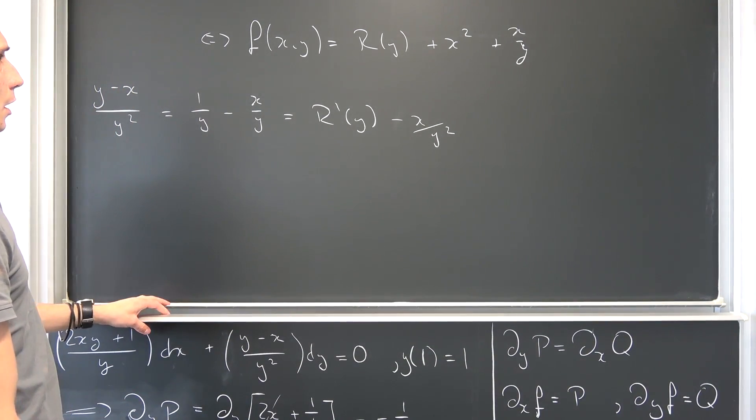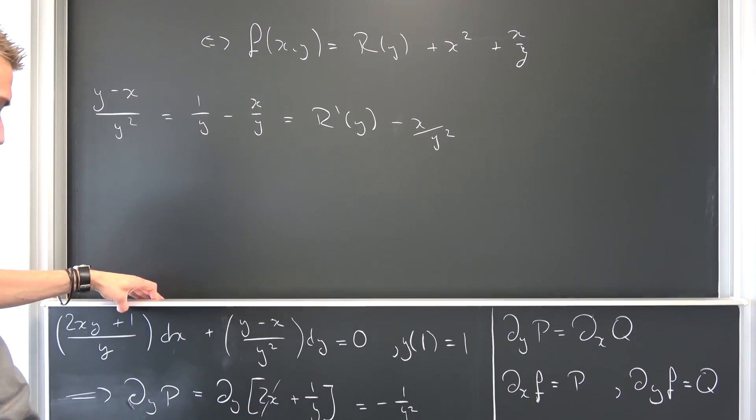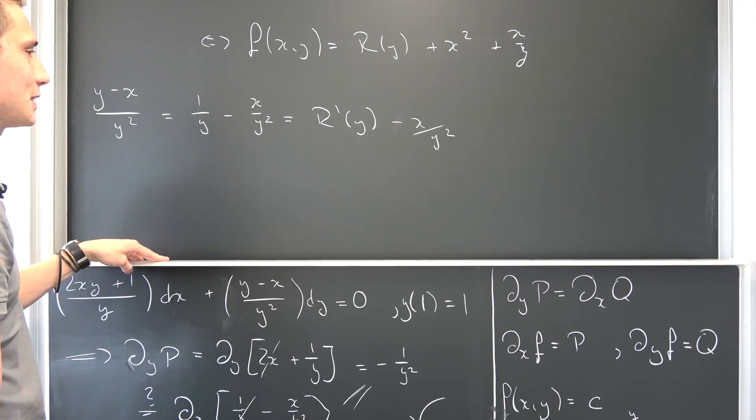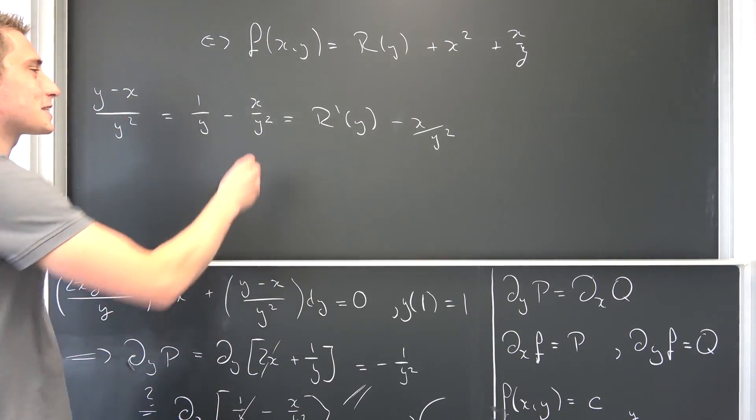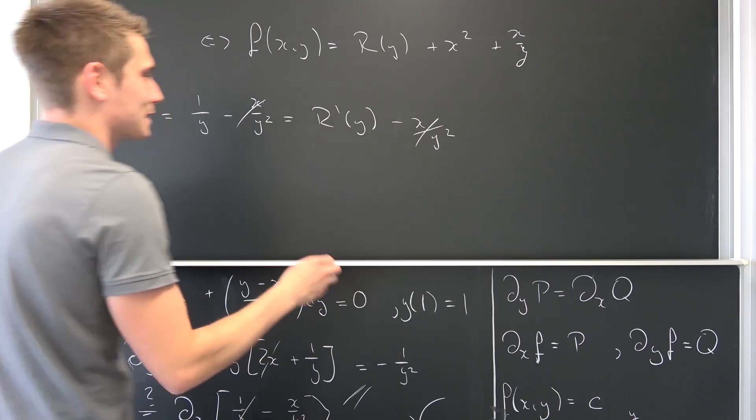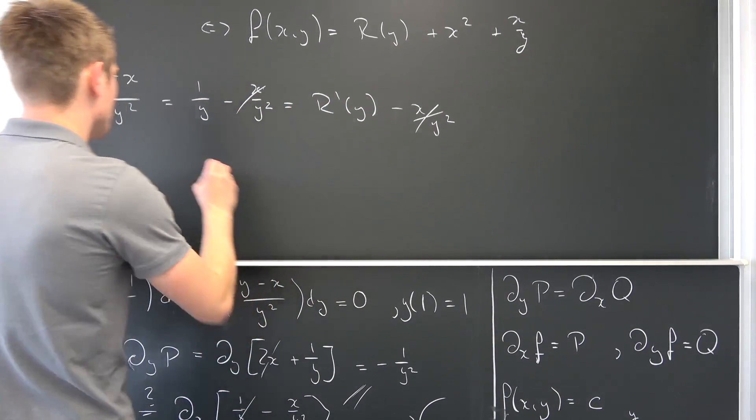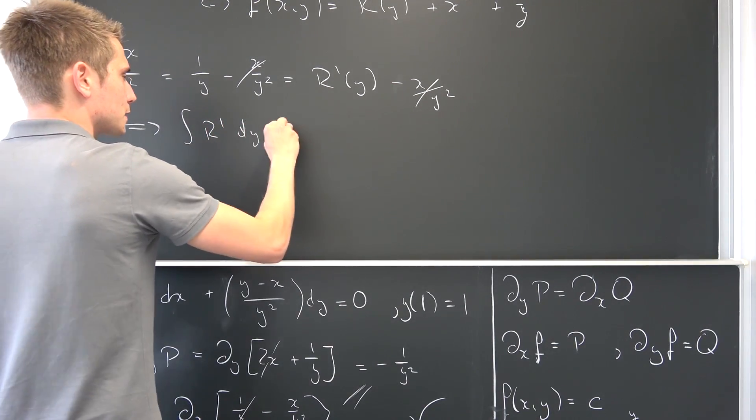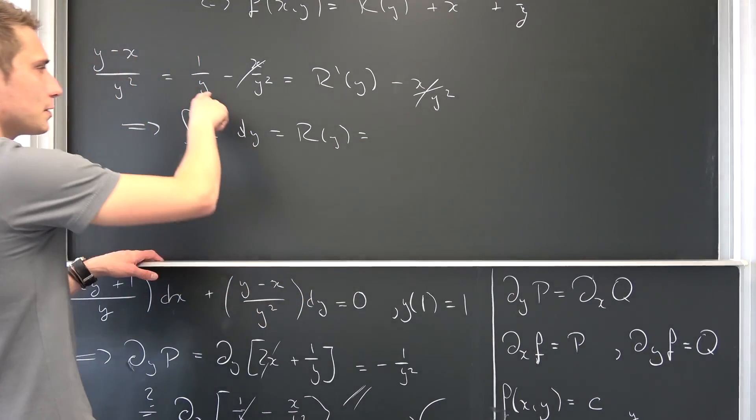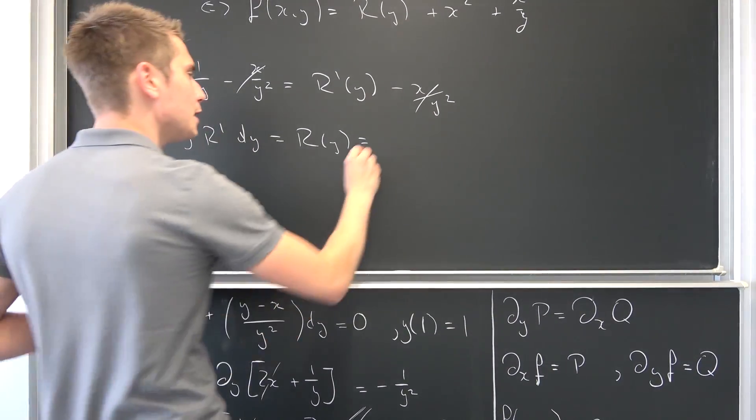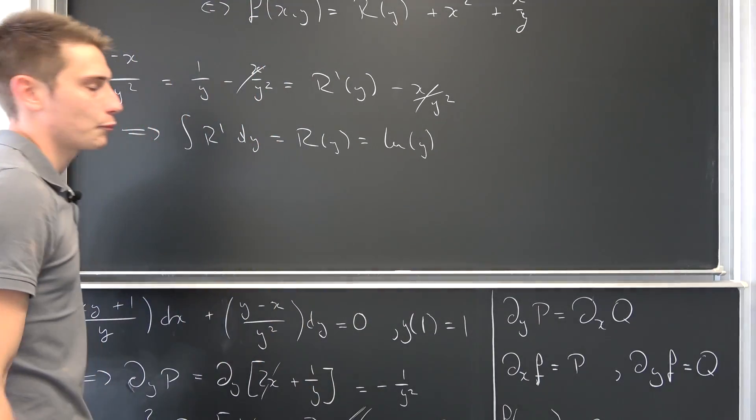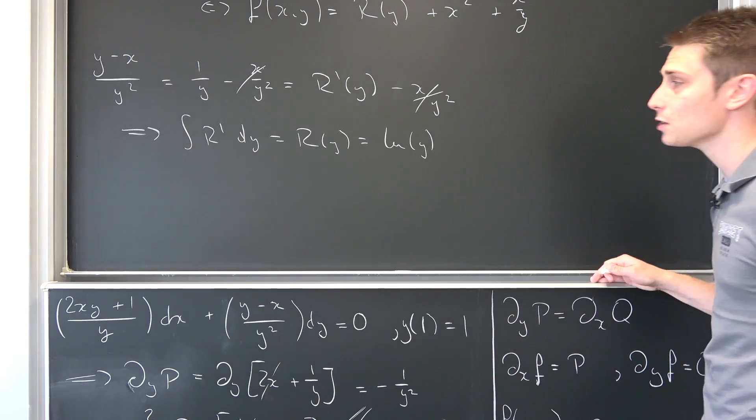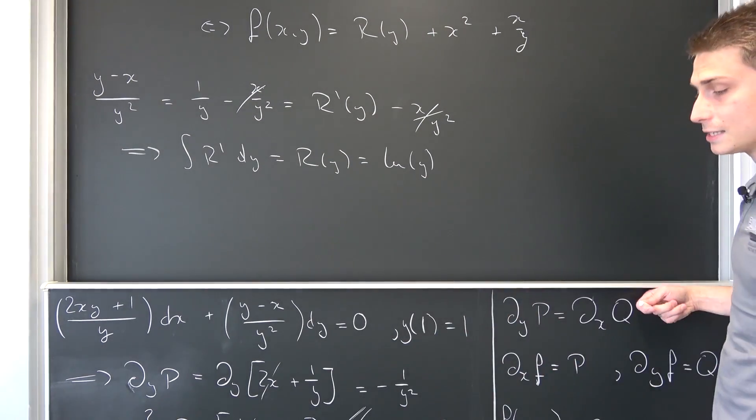This is what we have right now. Am I missing something? I'm missing something. I totally forgot the y² right here. As always, stuff is going to cancel out—this and that is going to cancel out. We can integrate this with respect to y on both sides. So integral of r' with respect to y is going to give us our r(y), and that's nothing but the integral of 1/y is the natural log of y, plus some arbitrary constant function. It's going to vanish in the process if you plug in your initial values. Now we can plug the natural log of y into here, and this is indeed what we had before.